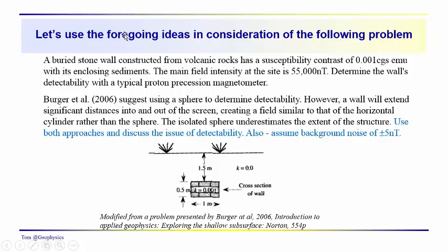The idea is to determine whether a proton precession magnetometer can actually detect this feature. Berger et al. suggests that one use a sphere to determine detectability. But think about a wall. The wall will extend significant distances in and out. You would also think that the isolated sphere would underestimate the extent of the structure and also the magnitude of the anomaly. Another modification I made is that let's assume this might be a fairly noisy day.